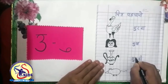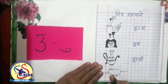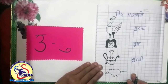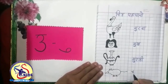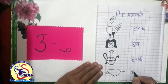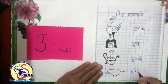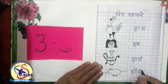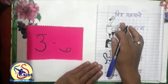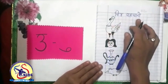And the last picture is chuhiya. The last picture is chuhiya, so we will write here: chuhiya. So kids, today we have done 'Chitra Banao'. I hope kids, you will revise the exercise at your homes.